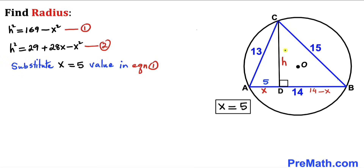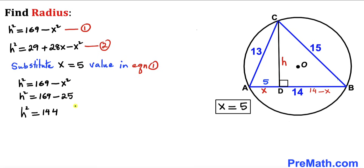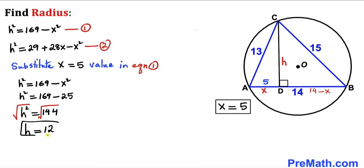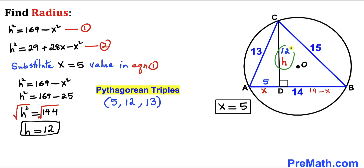Now let's calculate h by substituting x = 5 into Equation 1: h² = 169 − 5² = 169 − 25 = 144. Taking the square root gives h = 12. We could also have found this using the Pythagorean triple 5, 12, 13 — since 5 and 13 are given, the unknown side is 12.